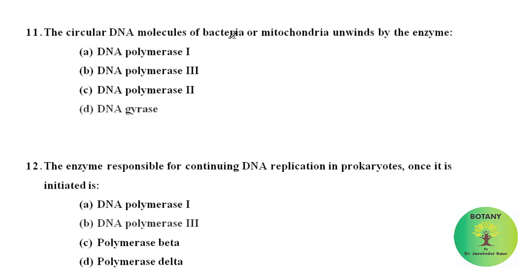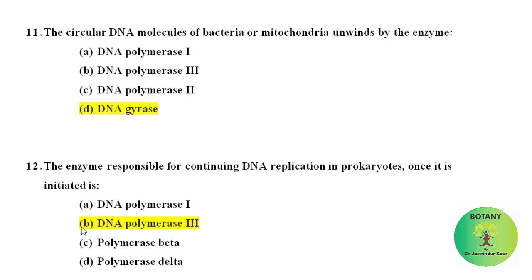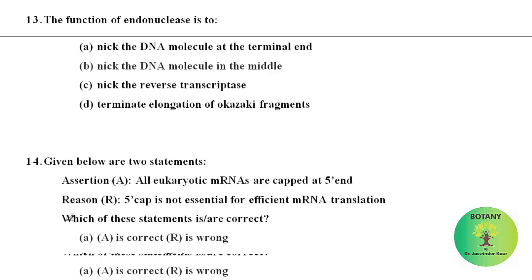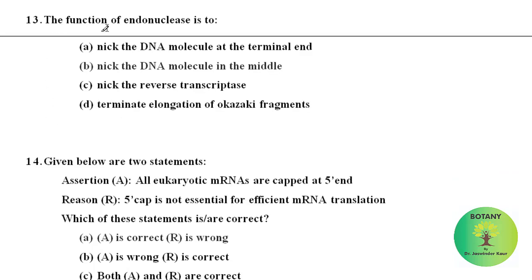The circular DNA molecules of bacteria or mitochondria unwind by which enzyme? The circular DNA molecules of bacteria as well as of mitochondria can be unwound using the enzyme DNA gyrase. The enzyme responsible for continuing DNA replication in prokaryotes once it is initiated is DNA polymerase III.